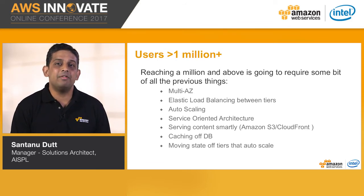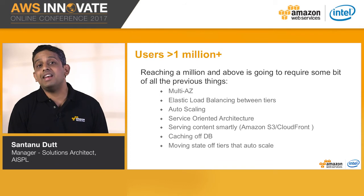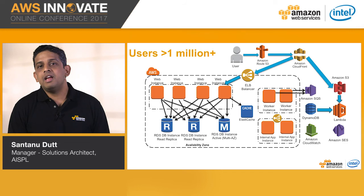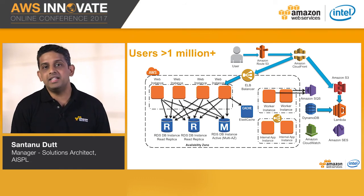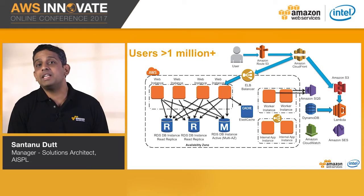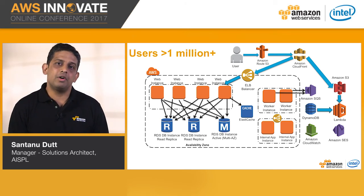Offload your web tier by removing static content and using caching in front of static and dynamic origins. Cache in front of the database and use read replicas for app reads or offline reporting and analytics. Move your session state off tiers that are auto-scalable, making them stateless. We've added internal pools for different tasks — perhaps using Simple Queuing Service for queuing, Simple Email Service for sending outbound bulk email, and AWS Lambda caching events from S3 and DynamoDB. Users still talk to Route 53 and then to CloudFront, with content hosted on the backend by ELB and S3.